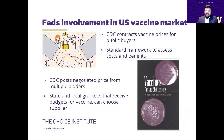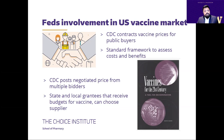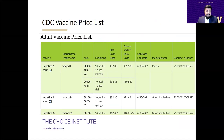In the U.S., the CDC contracts vaccine prices for public buyers once a vaccine has been developed, using a standard framework of cost and benefits. CDC posts these negotiated prices from multiple bidders but does not enter into volume-based contracts. Instead, state and local governments receive budgets for vaccines to purchase at these negotiated prices. Because of the idiosyncrasies and unpredictability of vaccine uptake, especially adult vaccines, manufacturers' revenues suffer. The negotiated prices for public programs are set much lower than in the private sector, but the quantity supplied is often not guaranteed.